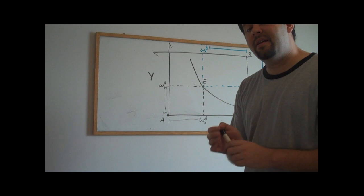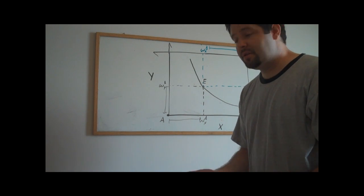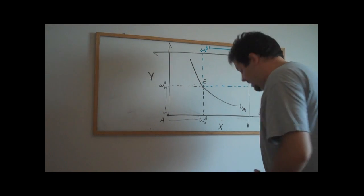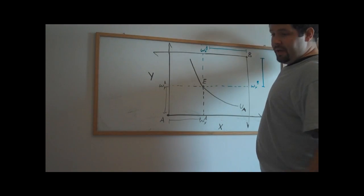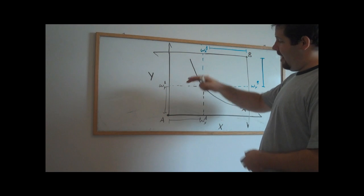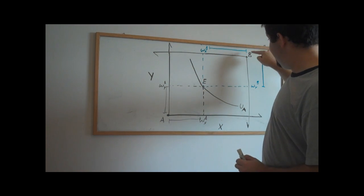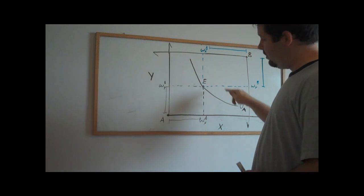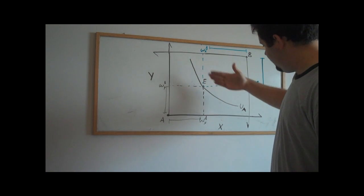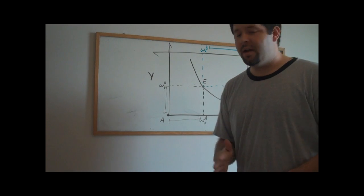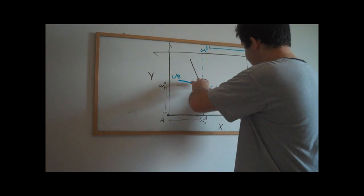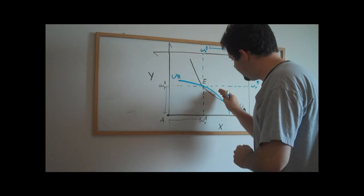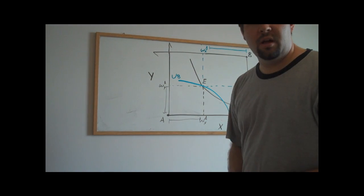Now, we could consider a similar indifference curve, but for individual B. Now, what we'll notice is that because individual B is looking at the plane this way, the convex to the origin is convex to his origin. So, these indifference curves are going to have a shape that looks opposite of what individual A's indifference curves look like. So, again, we divided this into what's better, what's worse, and what is just the same along that indifference curve.